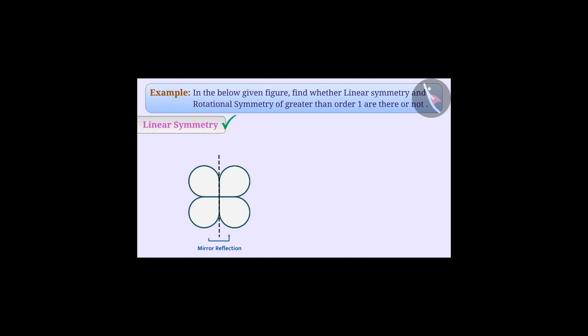Here the vertical line divides the shape in such a way that the left half is a mirror image of the right half. Hence, the figure has linear symmetry. The line along which we see linear symmetry is called a symmetric line.